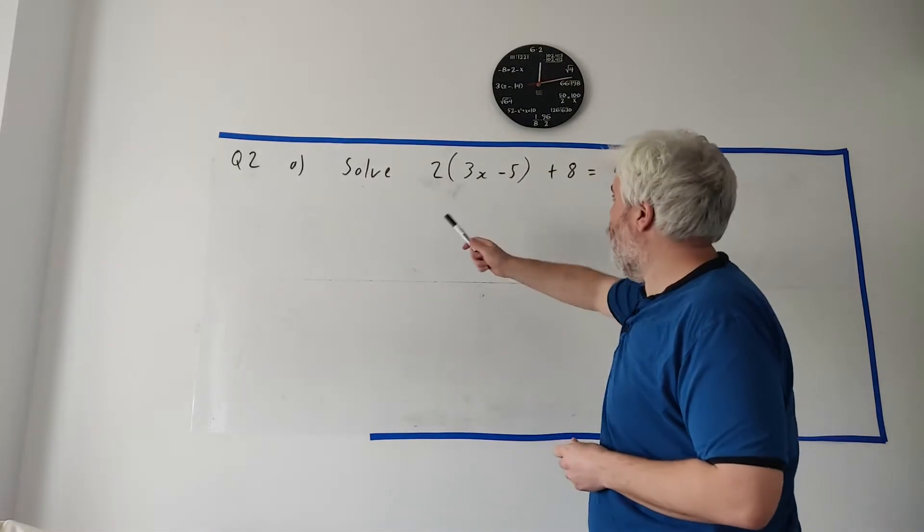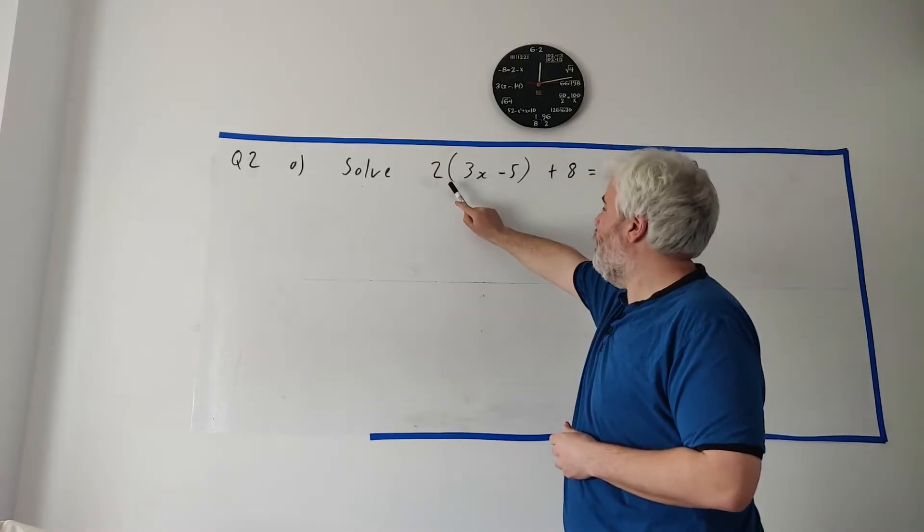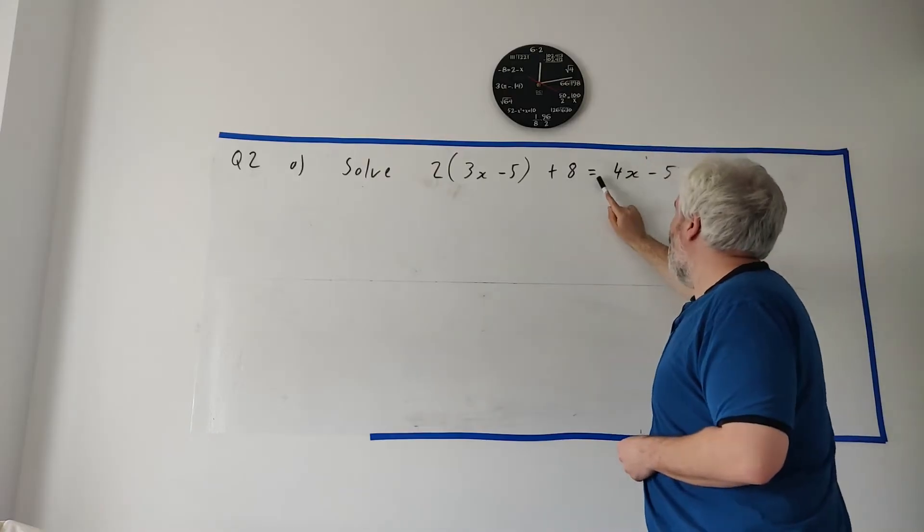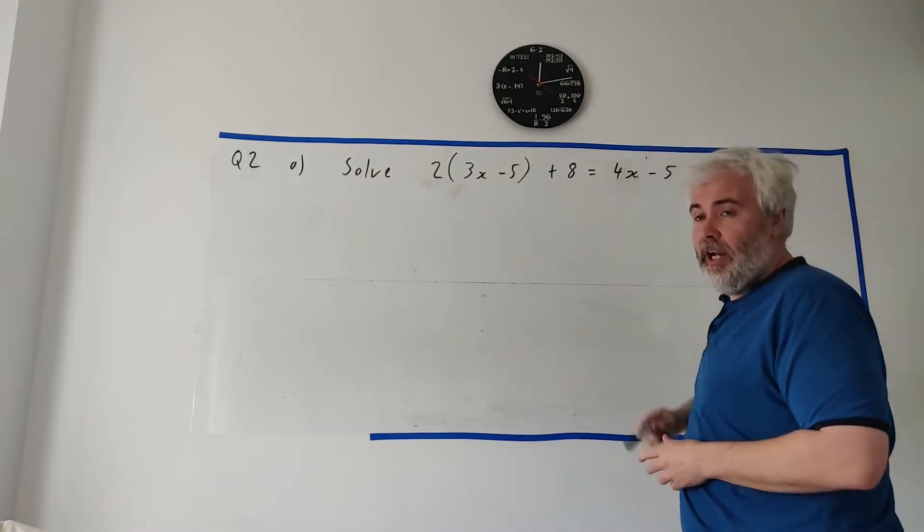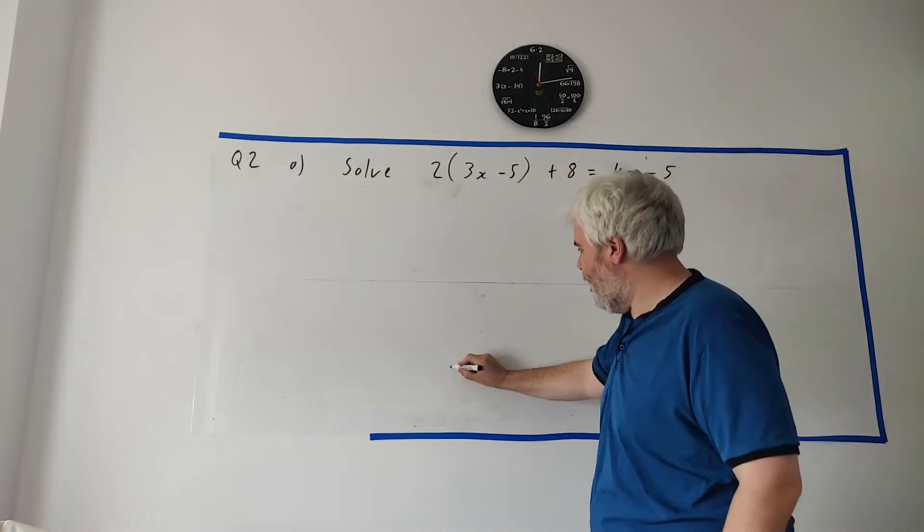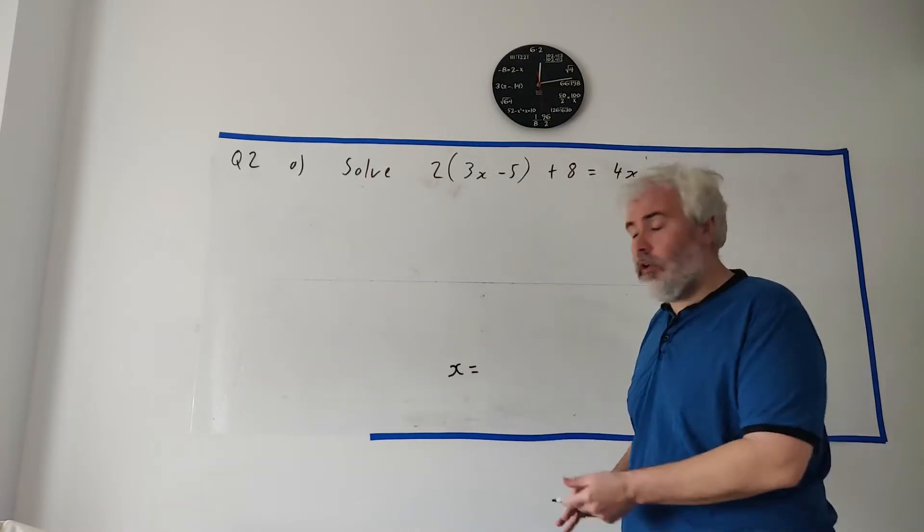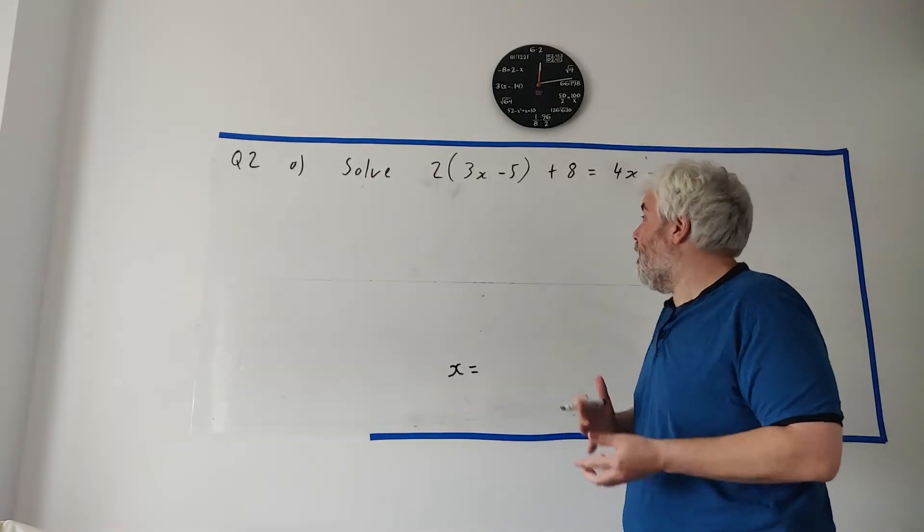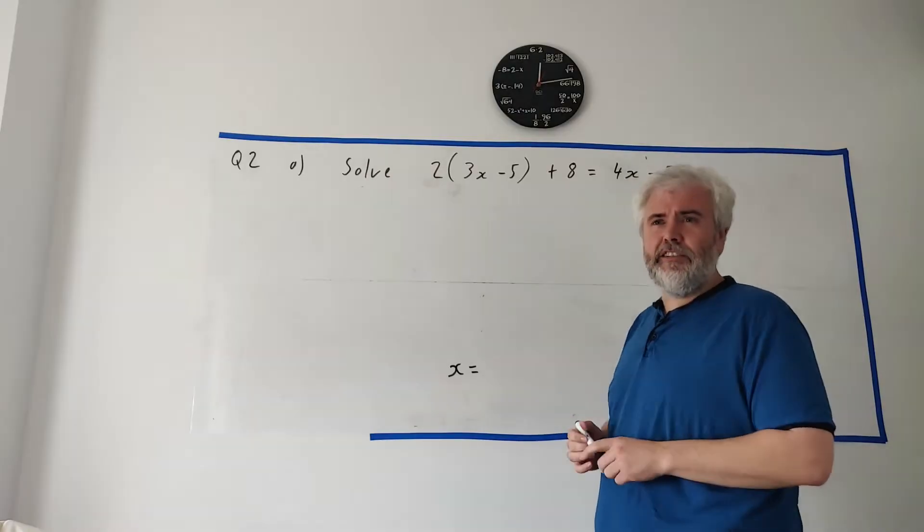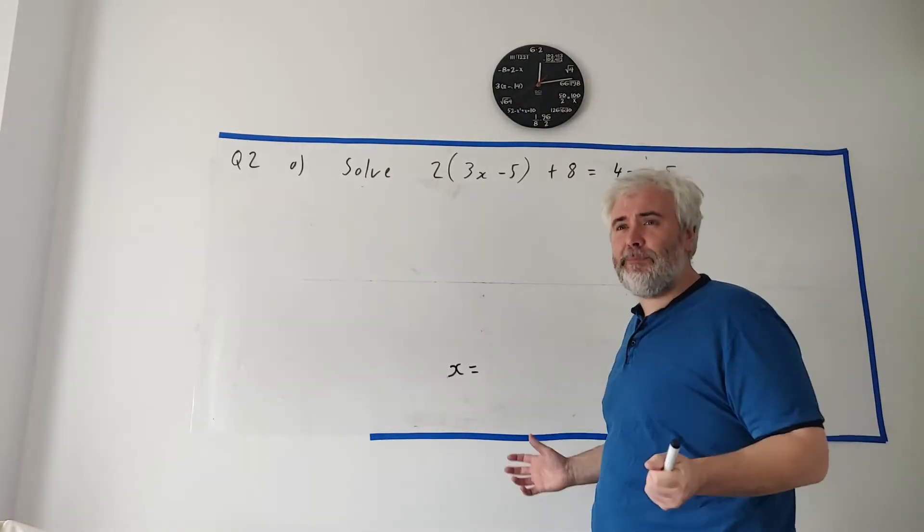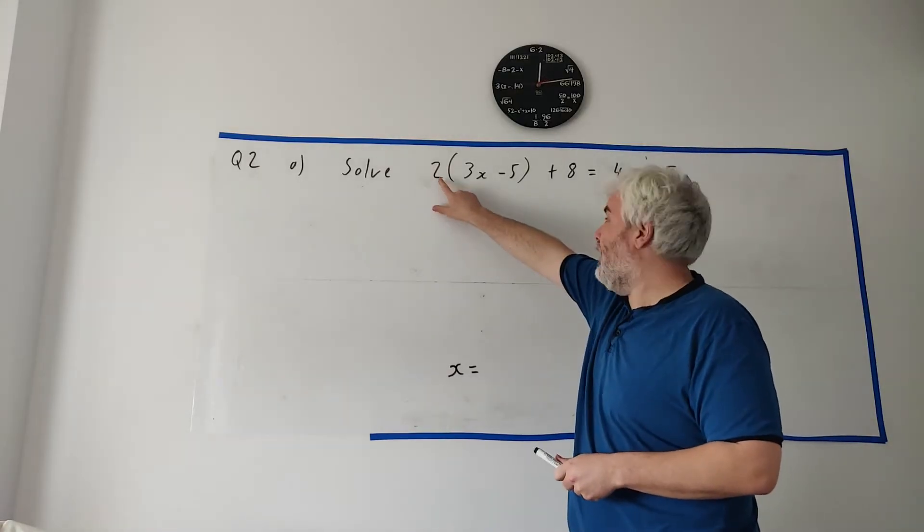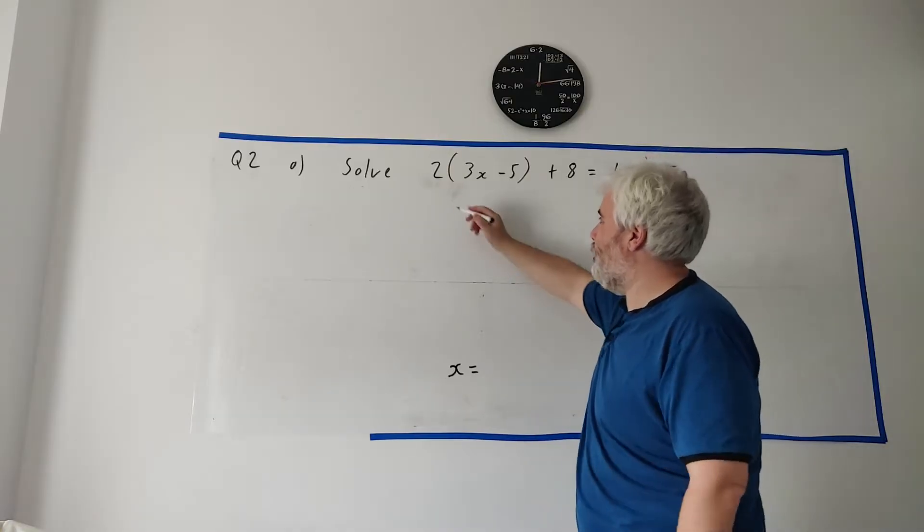Part A asks us to solve this equation here: 2 multiplied by the bracket that has 3x minus 5 plus 8 is all equal to 4x minus 5. When it says solve that, basically just play around with it until at the end you have x equals just a number. You've learned lots of things to do with these - how to move stuff, how to expand and multiply. So let's start doing that. I see a bracket, 2 outside acting into it. Let's multiply it in.